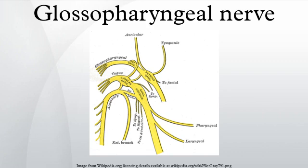The glossopharyngeal nerve, known as the ninth cranial nerve, is a mixed nerve that carries afferent sensory and afferent motor information. It exits the brainstem from the sides of the upper medulla, just rostral to the vagus nerve. The motor division is derived from the basal plate of the embryonic medulla oblongata, while the sensory division originates from the cranial neural crest.